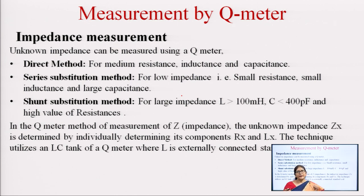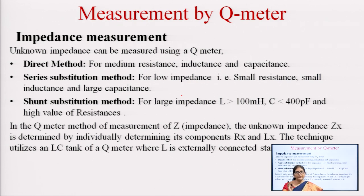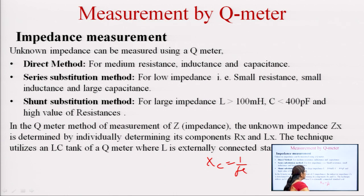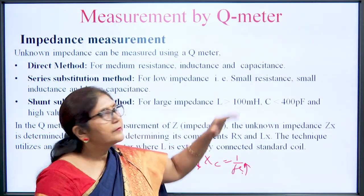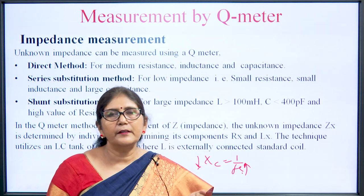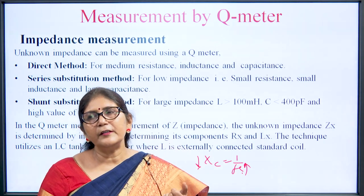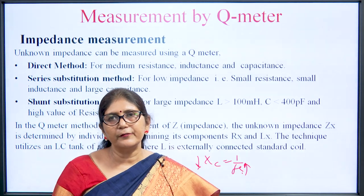There are three measurement methods: direct method, series substitution method, and shunt substitution method. The direct method is used for measurement of resistance, inductance, and capacitance having medium values. Series substitution methods are used for low impedance components like small resistance, small inductance, and large capacitance — large capacitance because XC = 1/(f·C), so small XC means large capacitance. Shunt substitution method is used when large impedance, small capacitance, or high resistance values are present.